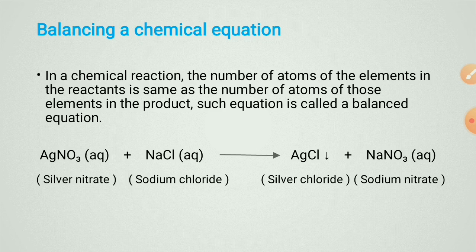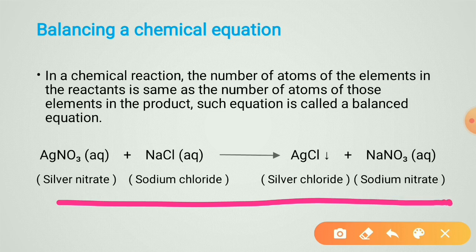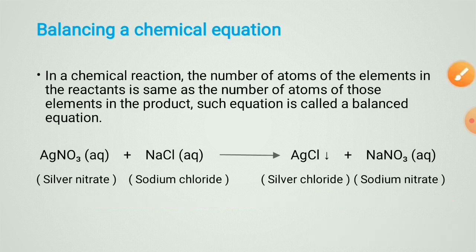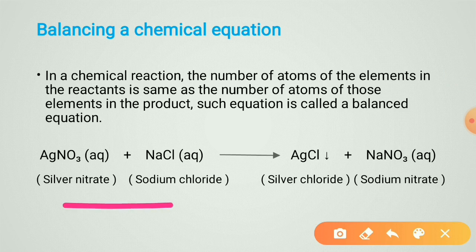Before that, let's see what is a balanced chemical equation. In a chemical reaction, the number of atoms of the elements in the reactant is the same as the number of atoms of those elements in the product. Such an equation is called a balanced equation. Here this equation is balanced: silver nitrate plus sodium chloride gives silver chloride plus sodium nitrate.